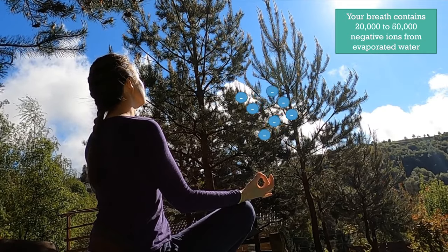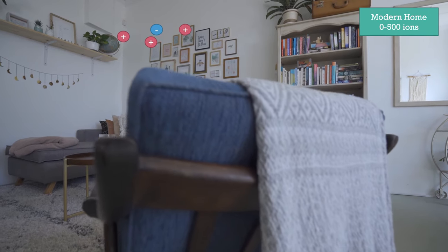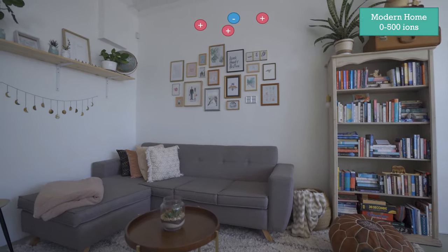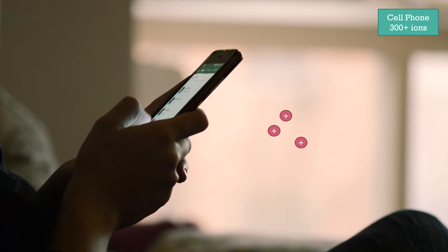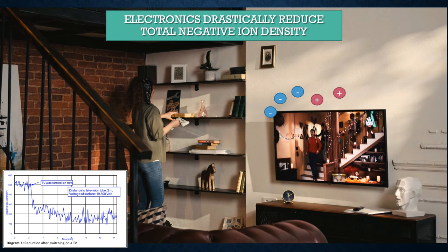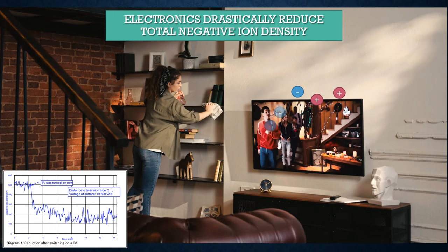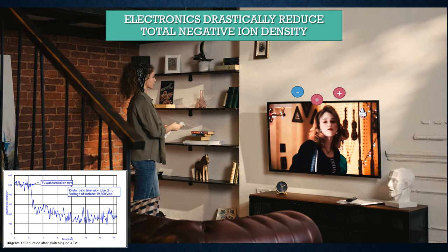Your breath contains 20 to 50,000 negative ions from evaporated water. The modern home has between 0 and 500 ions. Your cell phone emits 300 positive ions. UV light emits negative ions, and those ions help deactivate viruses and bacteria. Electronics drastically reduce total negative ion density within the room — they emit positive ions and the negative ions start to go away.